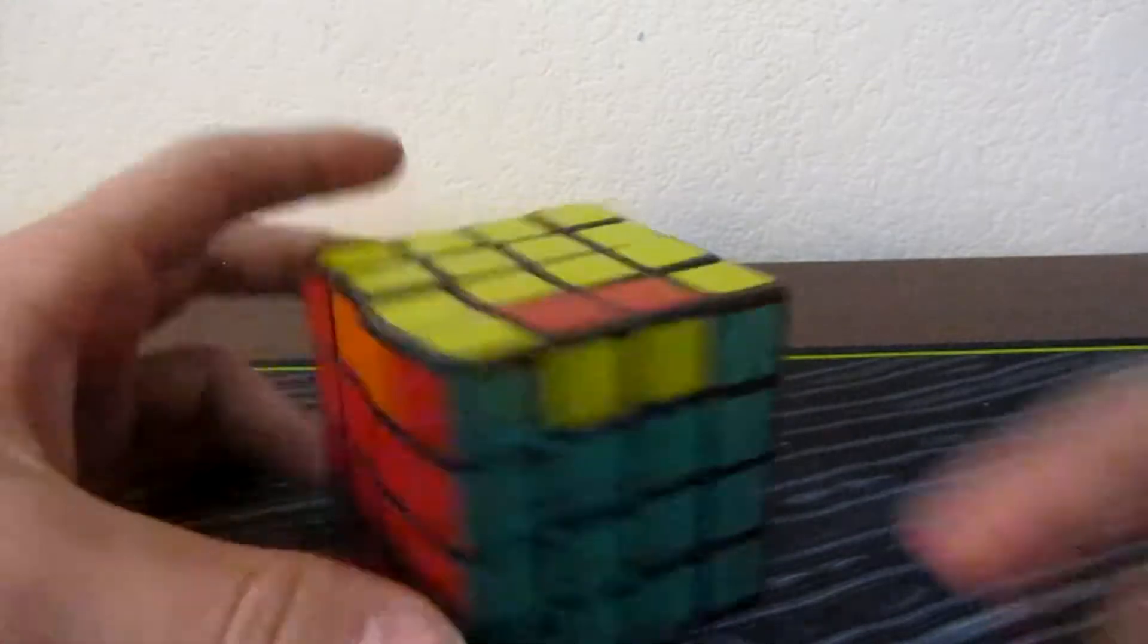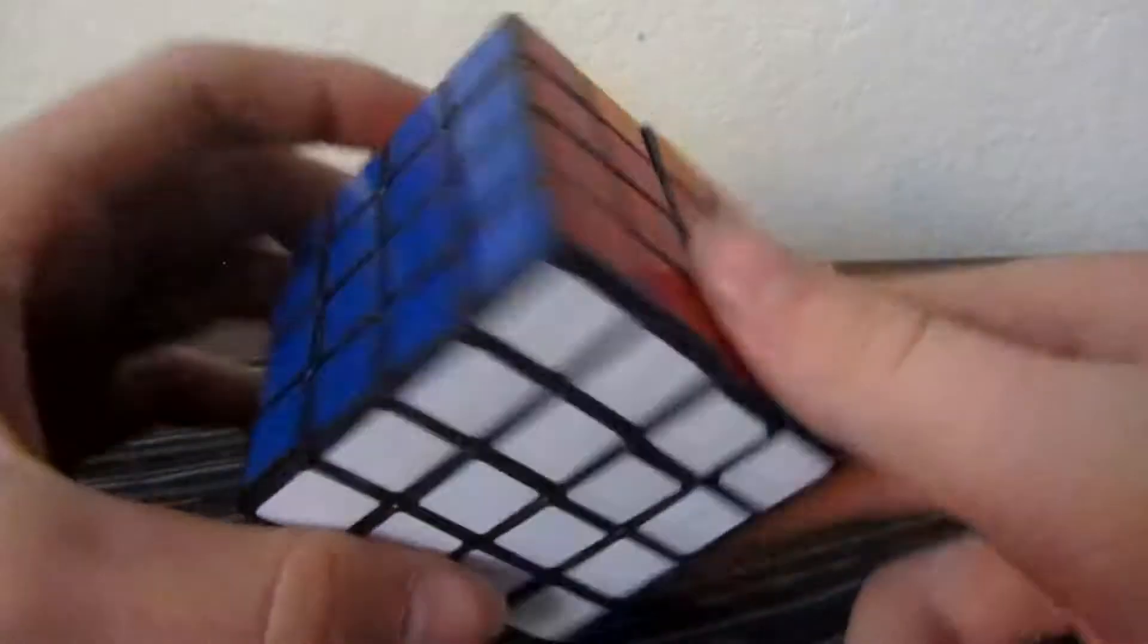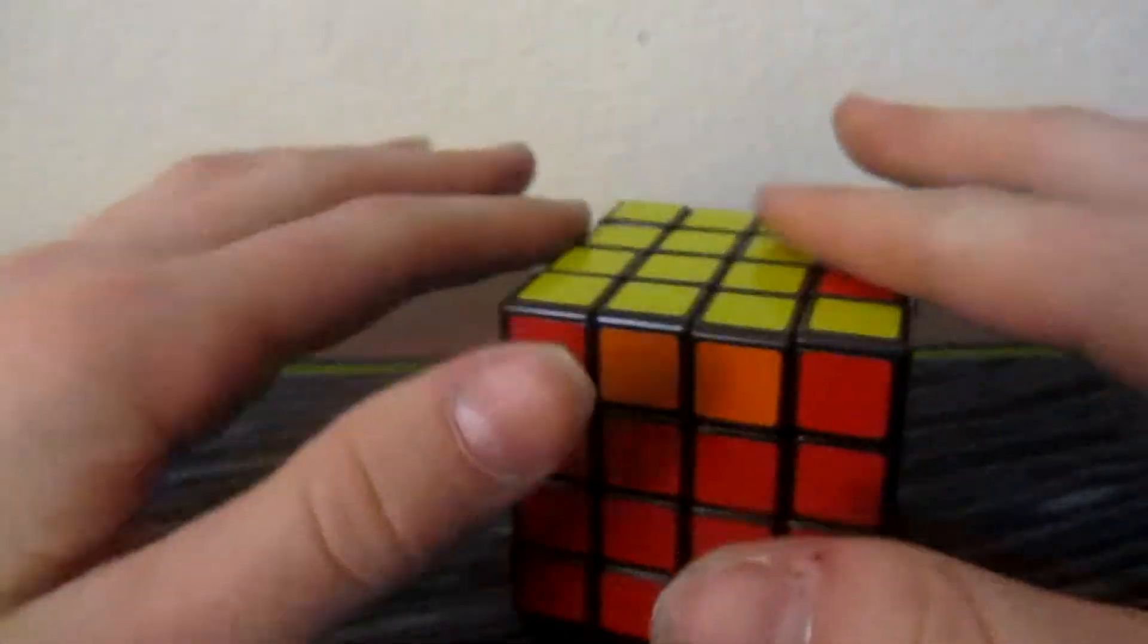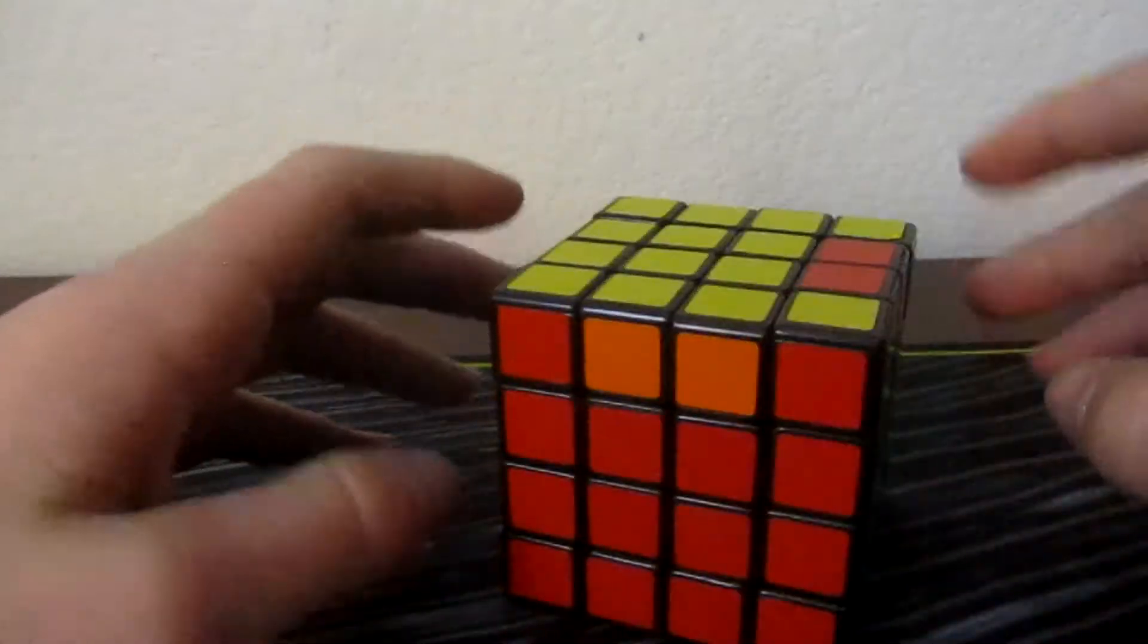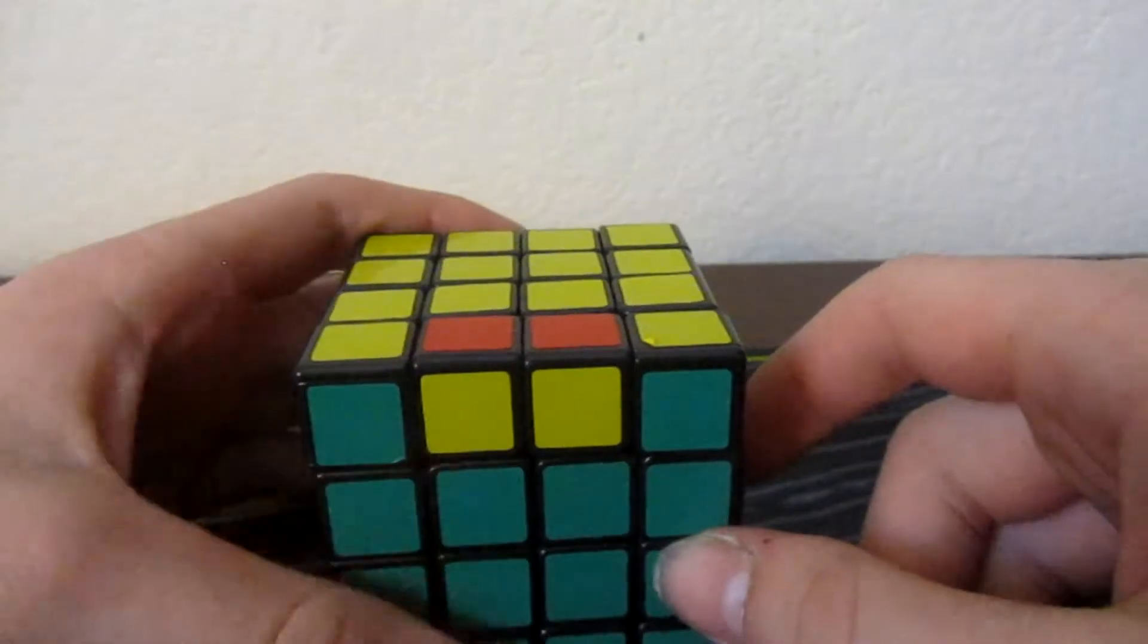This is known as the OLL parity. Usually you'll get this after you just finished these three layers and then you go to solve the top cross and the whole top OLL. And then you realize, what the heck? Why isn't the cross solving? Well, that's because you have a parity. OLL parity.